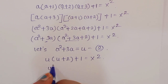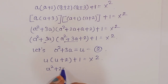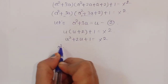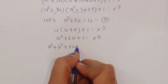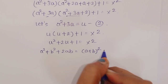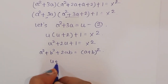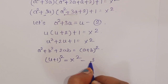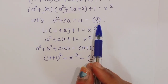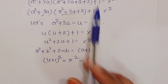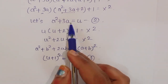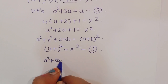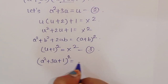This matches the formula a²+2ab+b² = (a+b)², so u²+2u+1 equals (u+1)². Therefore (u+1)² equals x squared — this is equation 3. Substituting back using equation 2, u = a²+3a, we get (a²+3a+1)² equals x squared.